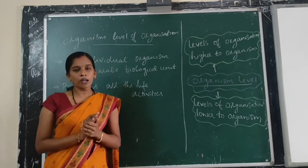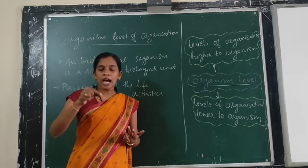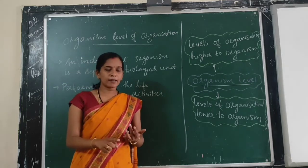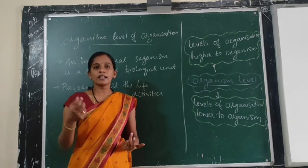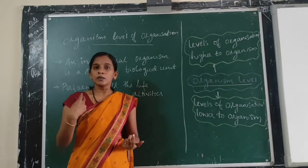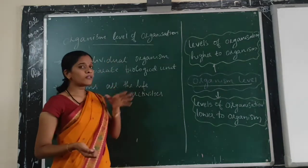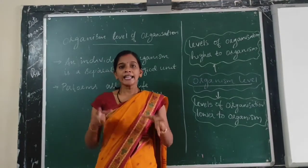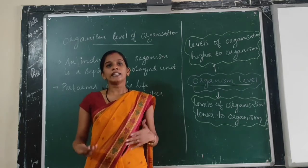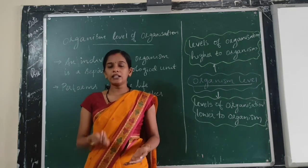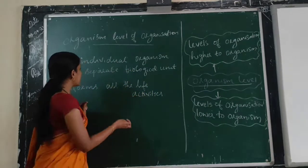An individual organism, whether it is a unicellular organism which has only one cell, or whether it is a multicellular organism which has more than one cell — in organism level of organization, an individual organism, whether it is a plant or animal, is considered to be a separate biological unit.